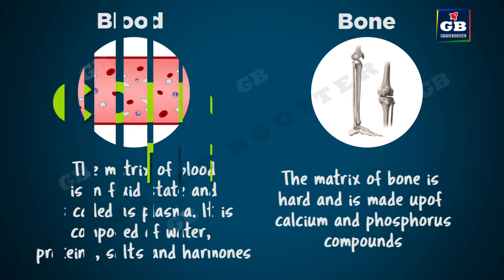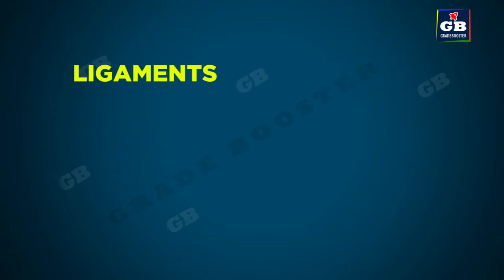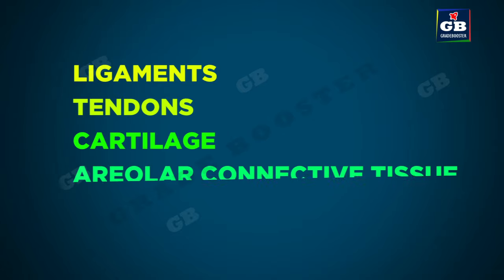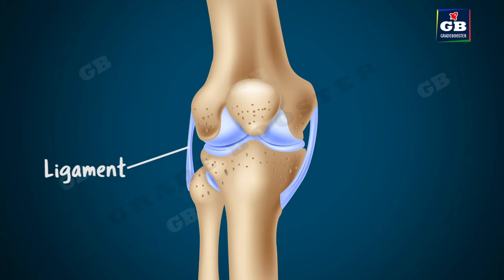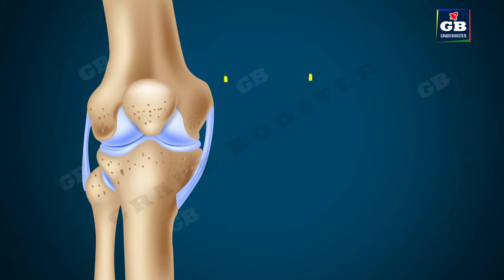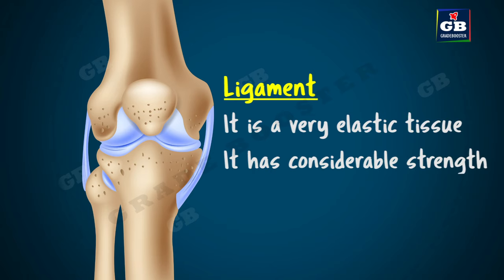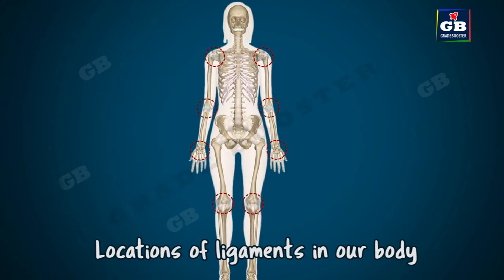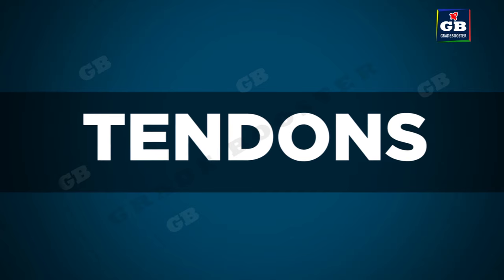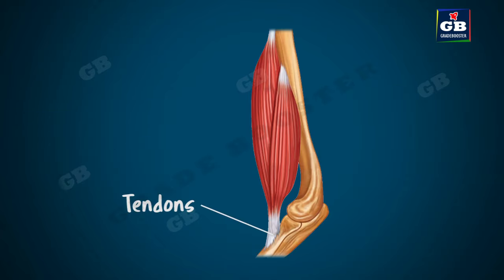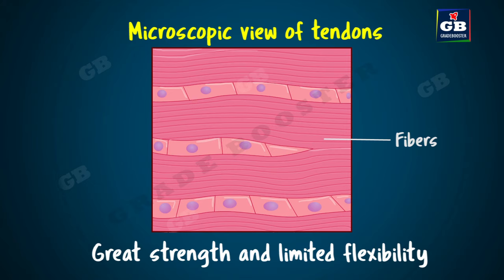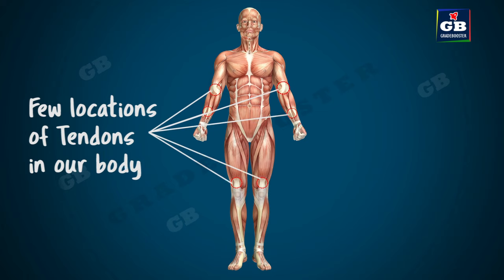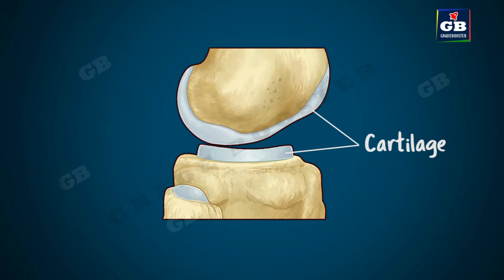Now let us learn about ligaments, tendons, and cartilage. Ligament is a kind of connective tissue that connects two bones together. This tissue is very elastic and has considerable strength, but has very little matrix. Tendon is a kind of connective tissue that connects the muscle to a bone. The matrix of tendon has many fibers; it has great strength and limited flexibility.